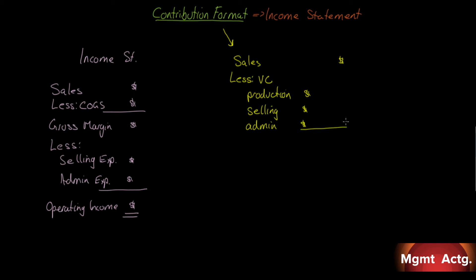Once we subtract that, we get what's called a contribution margin. It is the contribution from sales that are available to cover fixed costs.